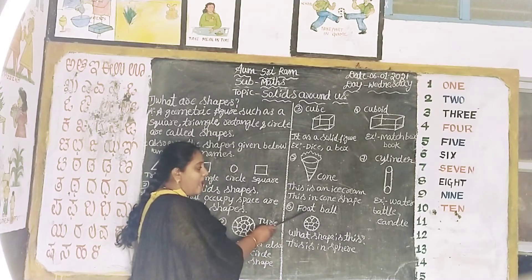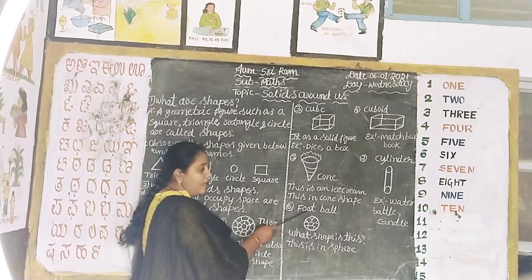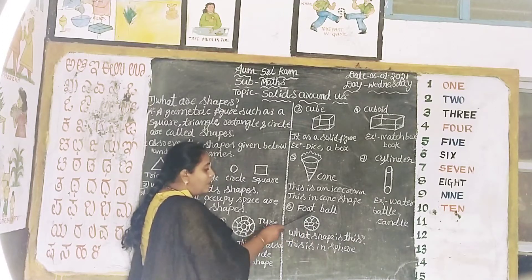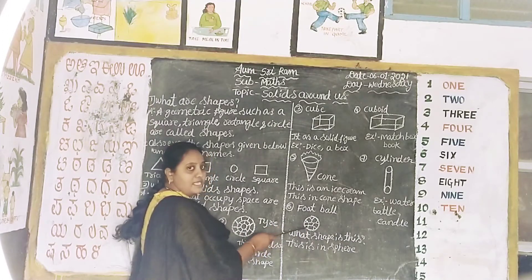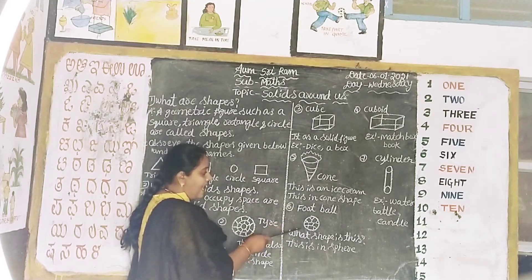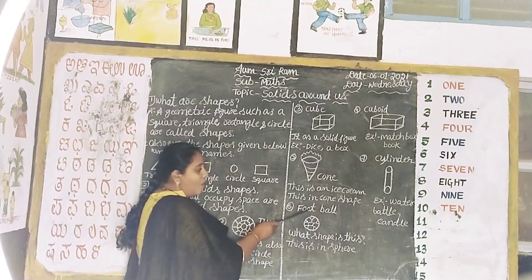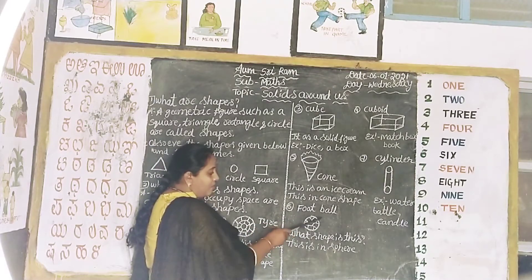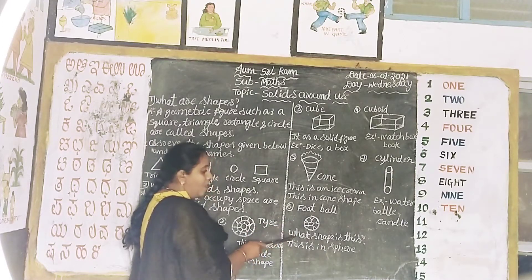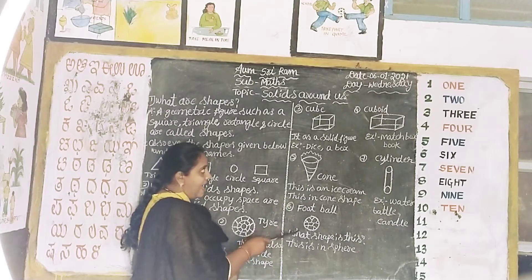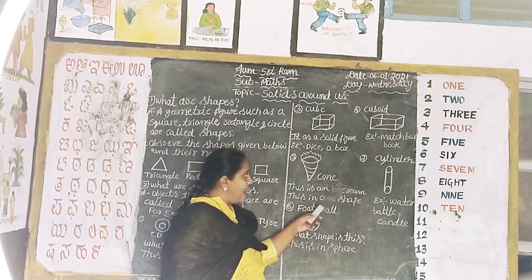Football. What shape is this? This is in sphere shape. Football. What shape is this? This is in sphere shape.